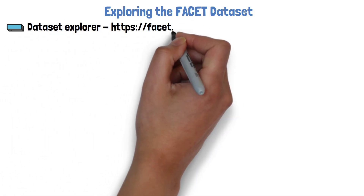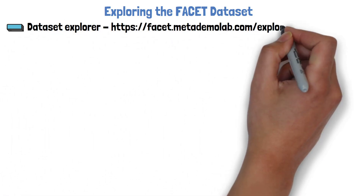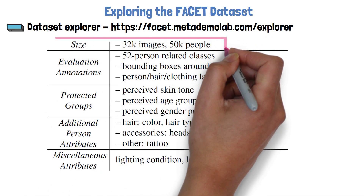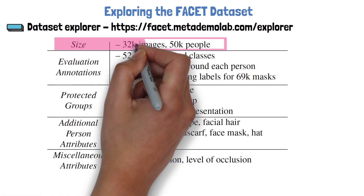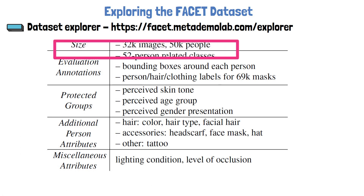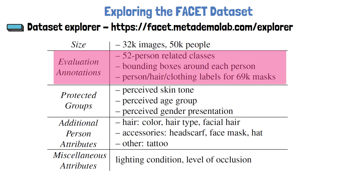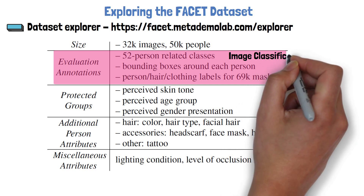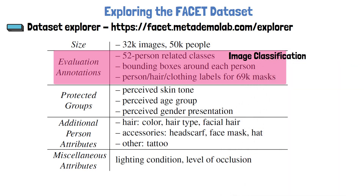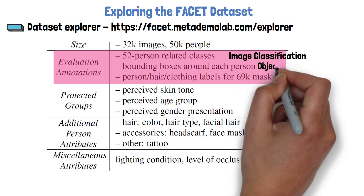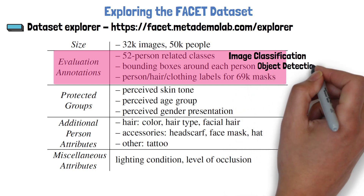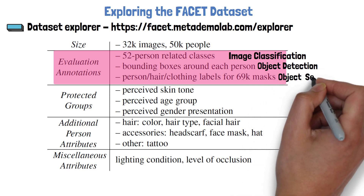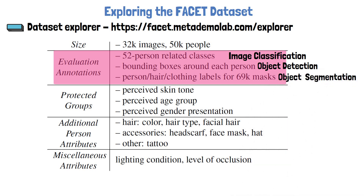If you'd like to explore more images in the dataset, you can do so in the Dataset Explorer available on the MetaDemoLab website. The dataset contains 32K images and 50K people, so there are images with more than one person in them. Each person is annotated with a class, such as the singer and the basketball player we just saw, which can be used to evaluate image classification models. Each person is also surrounded with a bounding box for object detection evaluation. The dataset also has 69K masks labeled as person, hair, or clothing, which can be used to evaluate image segmentation models.